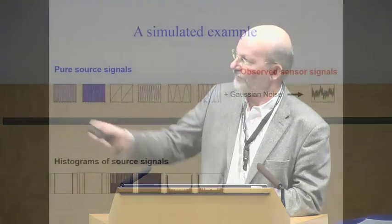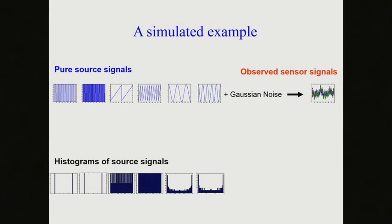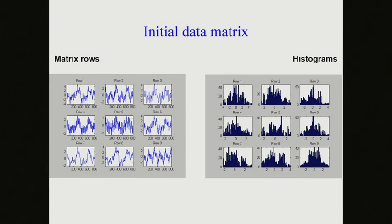If I look at the histograms of my source signals, you can see they're not at all Gaussian. The sinusoidal signal has more intensities at the top and bottom than in the middle, explaining that distribution. But if you look at the histogram of the mixtures, it's Gaussian. So if you want to extract your pure source signals from the mixtures, you have to try to generate non-Gaussian histograms.